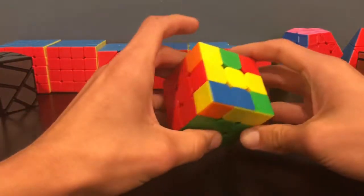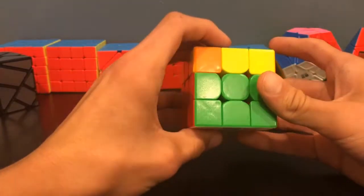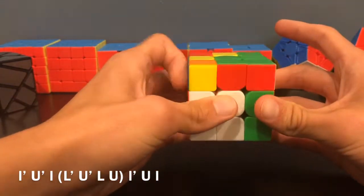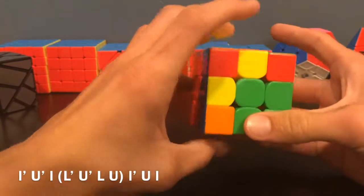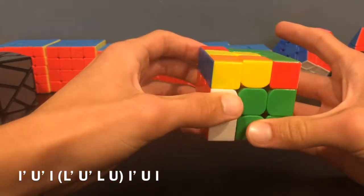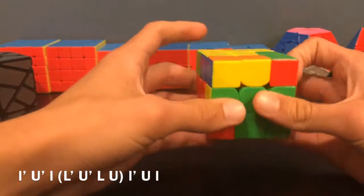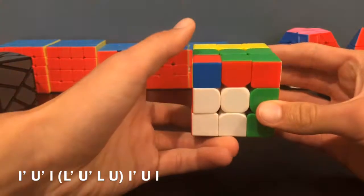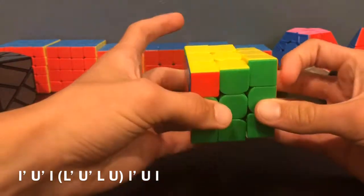And then you'll essentially just mirror that algorithm to do it for this one. So you'll do L wide prime U' L wide L' U' L U L wide U L wide.